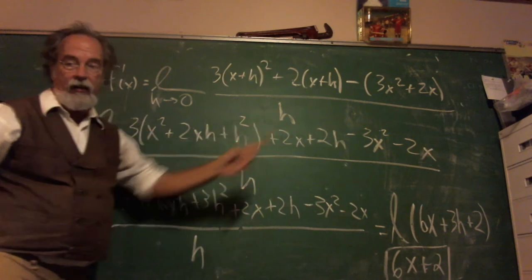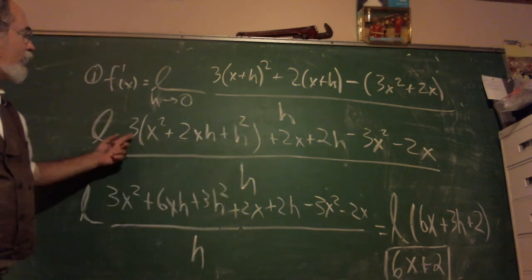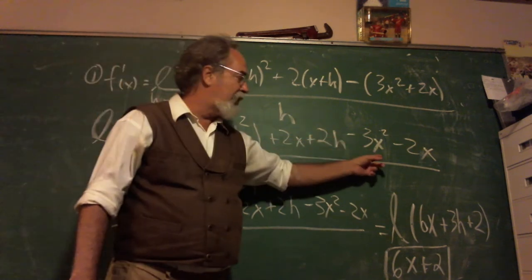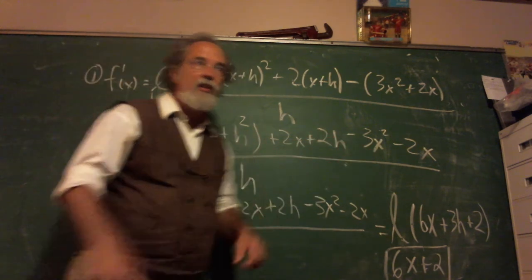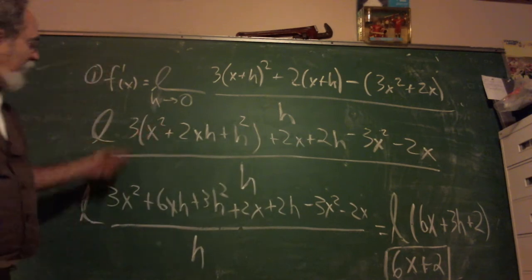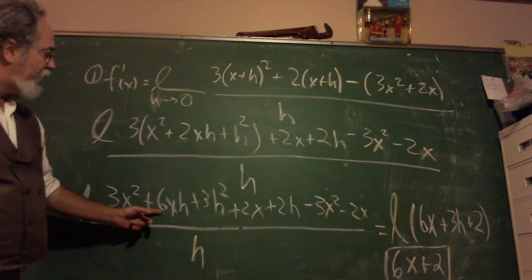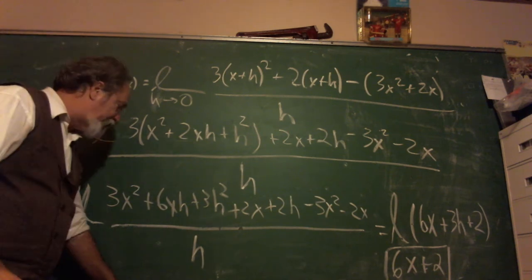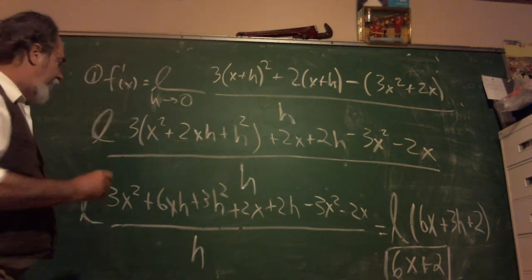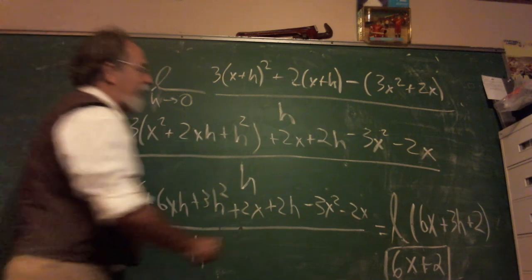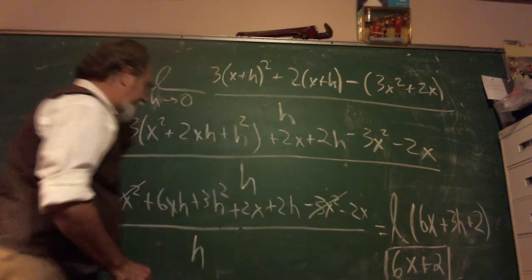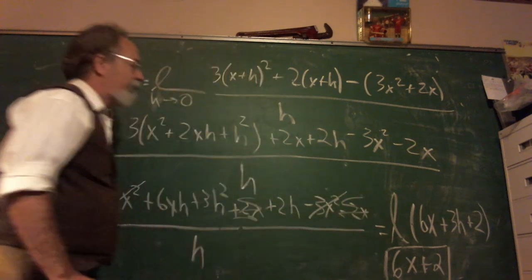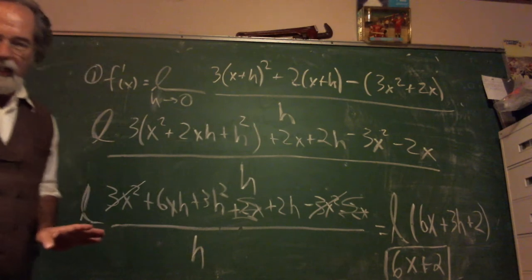You got to square out that x plus h. Don't lose that 3 in front. I distributed the 2 because I could, distributed the minus sign because I could. Now I'm going to distribute this 3, so I get 3x² + 6xh + 3h². Now the bloodbath begins. Let's kill some stuff off. I can kill off the 3x² and the minus 3x², I can bump off the 2x and the negative 2x.